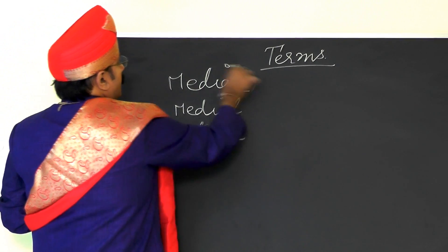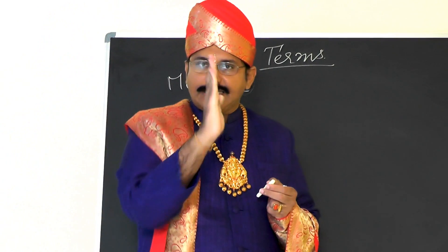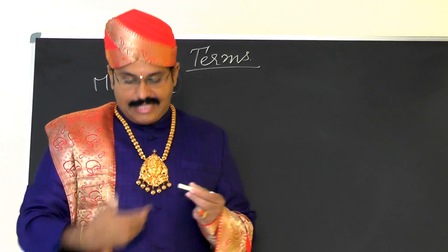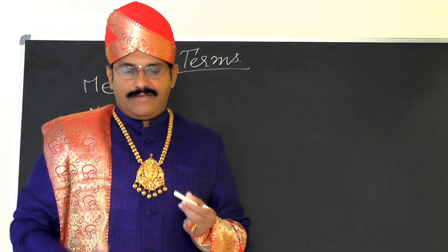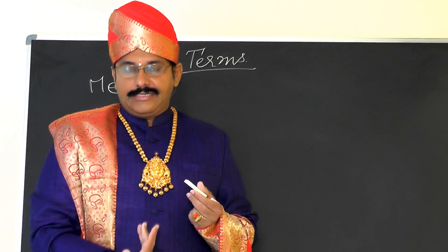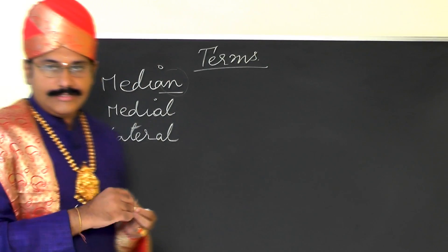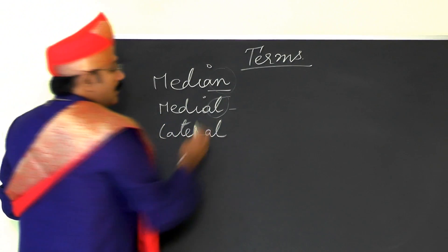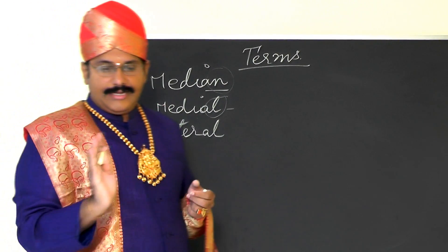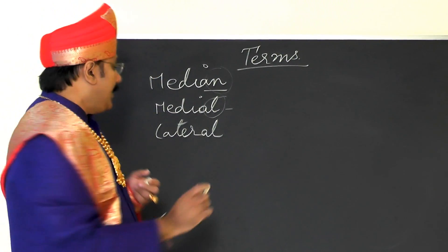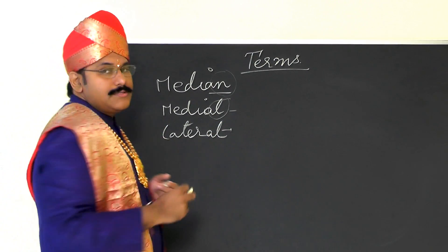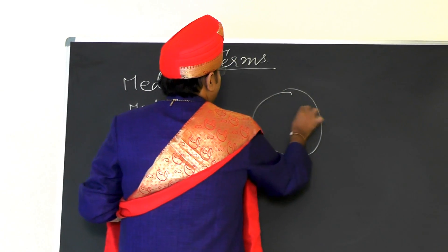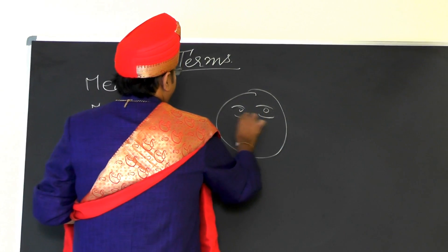Median means always in the center. For example, the nose is always in the center of the face. Similarly, the umbilicus is always in the center of the trunk — always in the midline. Medial means towards the center, and lateral means away from the center.